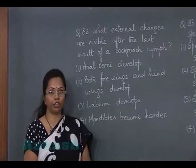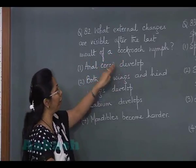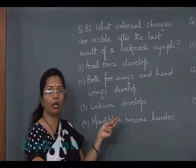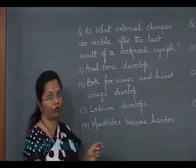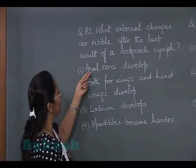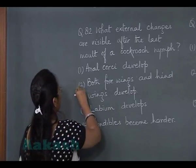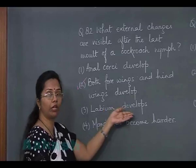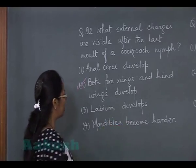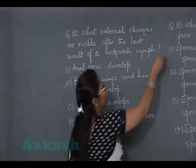In question number 82, we have to find what external changes are visible after the last molt of a cockroach nymph. The cockroach nymph undergoes 13 moltings and is exactly like the adult except for the absence of gonads and wings. Externally, we can see only the wings developing. Both forewings and hind wings develop — this is the correct choice. The labium and mandibles options are incorrect. The correct answer is option 2.